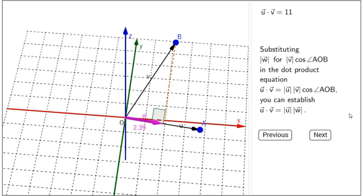Now, this is where the interactive figure ends, but I do want to introduce one last equation. Just take this equation here and solve for the length of W. And we get the length of W equals U dot V divided by the length of U.